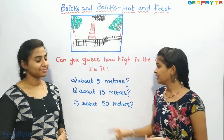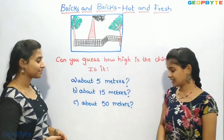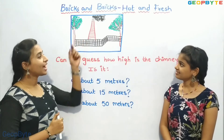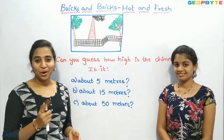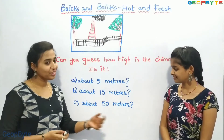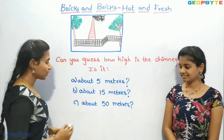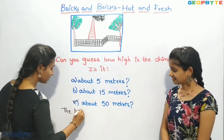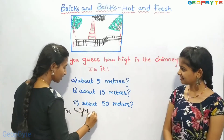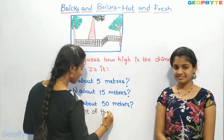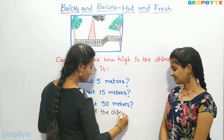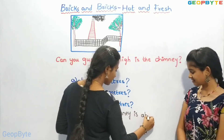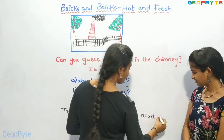Children, we need to find out how much the height of the chimney will be. Obviously, it will be about 50 meters. So the height of the chimney is about 50 meters.